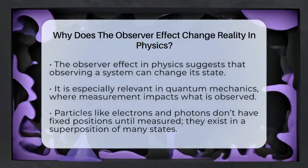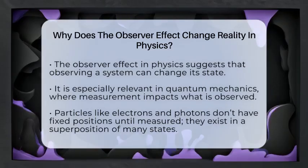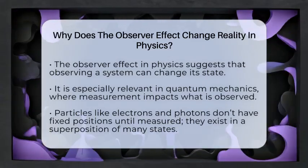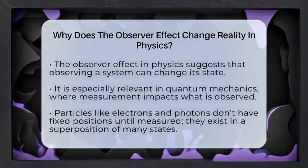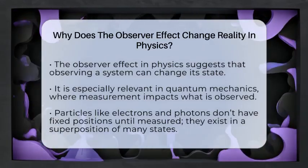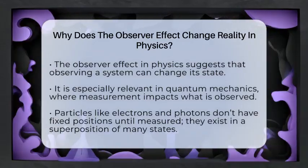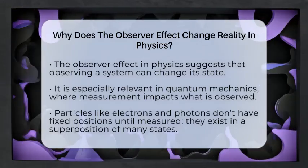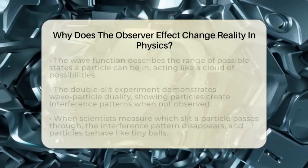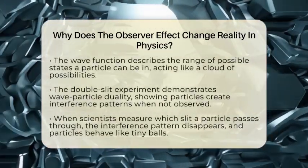At the core of this effect is something called wave-particle duality. Particles like electrons and photons don't have fixed positions or paths until you measure them. Instead, they exist in a superposition of many states at once, described by a mathematical wave function. Think of the wave function as a cloud of possibilities, where the particle could be in many places or states simultaneously.